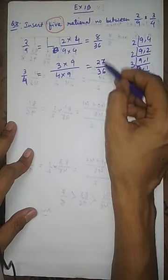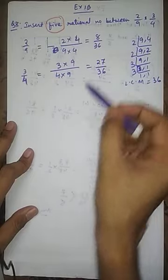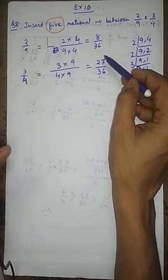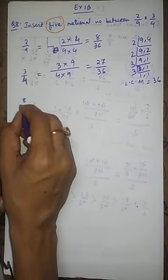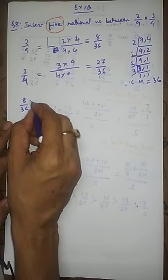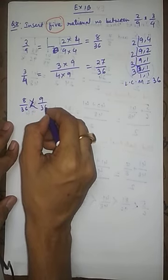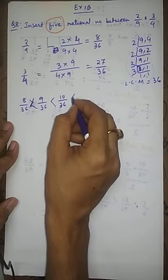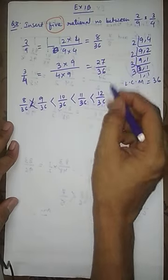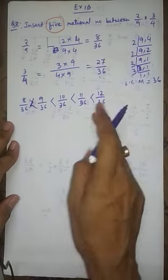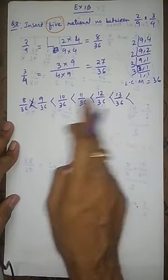Now we need to find 5 rational numbers between 8 by 36 and 27 by 36. Between 8 and 27 there are many integers: 9, 10, 11, 12, and so on. So we can easily write any 5 numbers: 8 by 36 < 9 by 36 < 10 by 36 < 11 by 36 < 12 by 36 < 13 by 36. That gives us 5 rational numbers. Then we write 27 by 36 at the end.